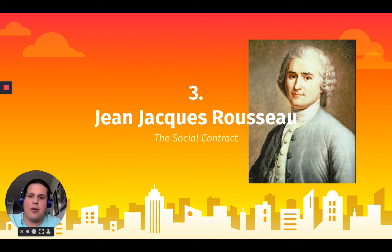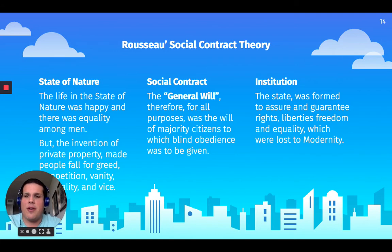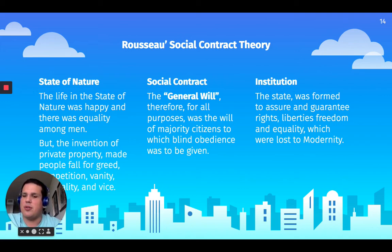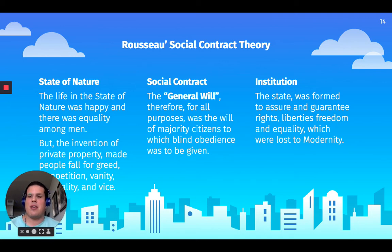The third and final social contract theory is from Jean-Jacques Rousseau. He writes the Social Contract, and we're going to be talking about the concept of the general will. The state of nature is a life that is happy and there's equality among men — very similar to John Locke's state of nature. But the invention of private property made people fall into greed, competition, and envy. And so because of that struggle between being equal and happy and getting what you want, people are going to be coming together again under pactum unionis to create the general will.